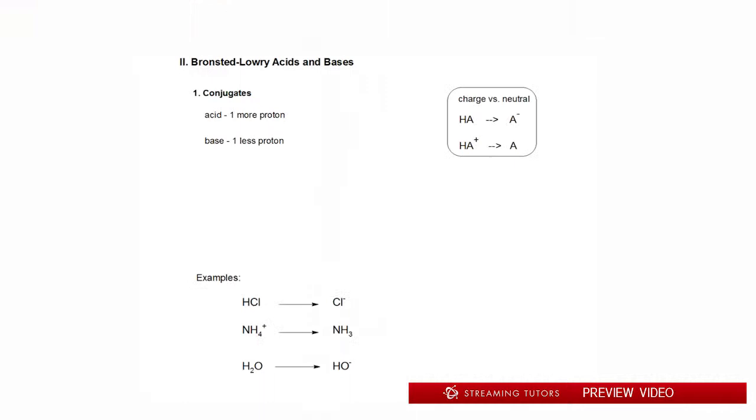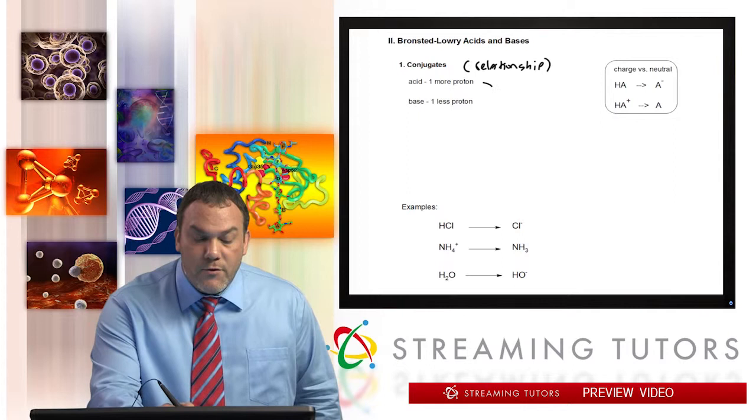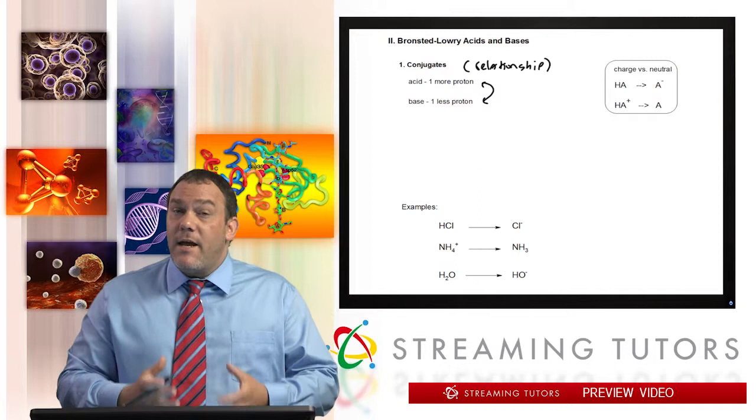The first thing that we see here is we're going to talk about conjugates. What are conjugates? A conjugate is a relationship term. This is a relationship between two molecules. The relationship between them is that one of them can have an extra proton and the other can have one less proton. So the difference is one more or less protons between the two molecules.